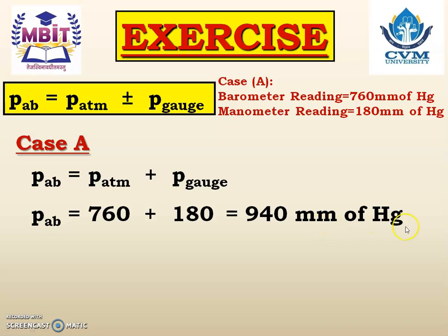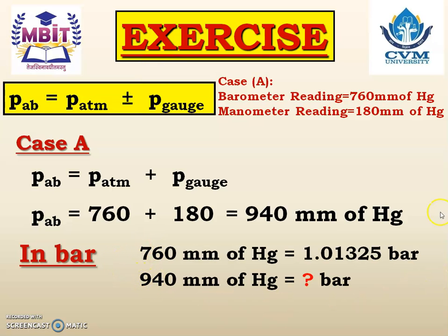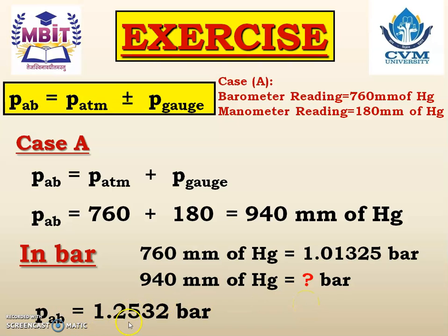We have to convert the unit from millimeter of Hg into bar and pascal. The conversion formula is: 760 millimeter of Hg equals 1.01325 bar. Using that equation, 940 millimeter of Hg equals 1.2532 bar. So that is the answer in bar.